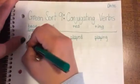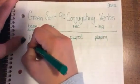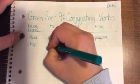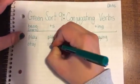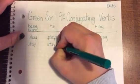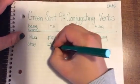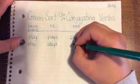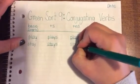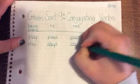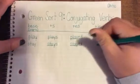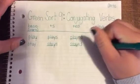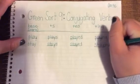Another example is stay — that's your base verb. Stay becomes stays by writing stay and adding the s. Stay becomes stayed by putting stay and then ed. Stay becomes staying by writing stay and adding ing.